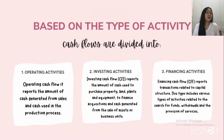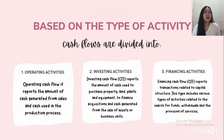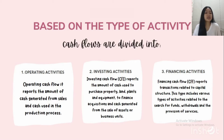The first is operating activities. Operating cash flow reports the amount of cash generated from sales and cash used in the production process. Included in this category are business activities related to earning-related activities. These activities include various cash outflow and cash inflow resulting from lending to the customer, investing in inventory, obtaining credit from suppliers, and so on. This operating activity relates to the accounts indicated in the income statement.